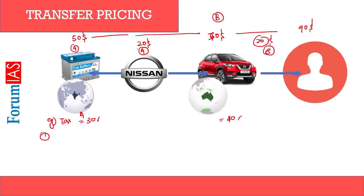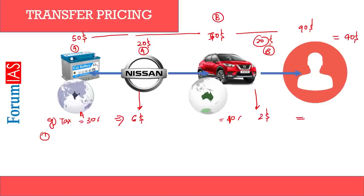In the normal unmanipulated case: company A has a $20 profit and company B has a $20 profit. The AB company overall has a $40 benefit. With India's 30% tax on A's $20 profit, they pay $6; with Australia's 10% tax on B's $20 profit, they pay $2. The total tax paid overall is $8.